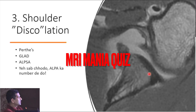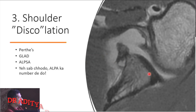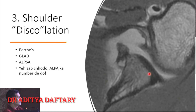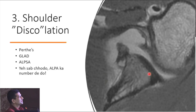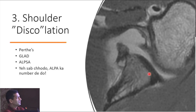This is a shoulder dislocation case. It is a Perthes, GLAD, ALPSA — or these two can also be asked. The answer is GLAD.